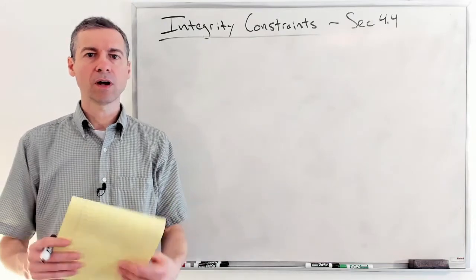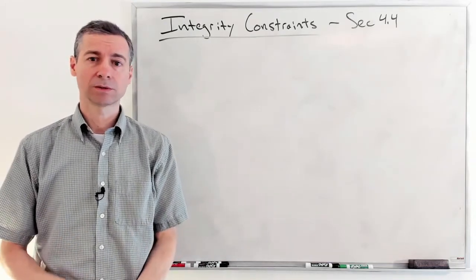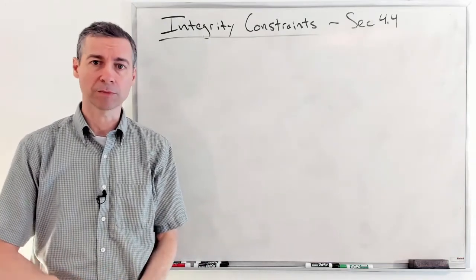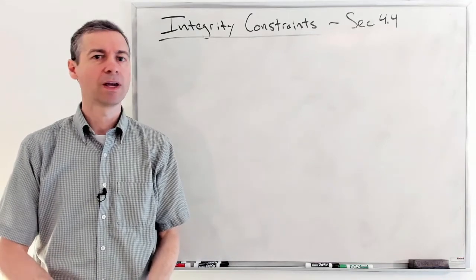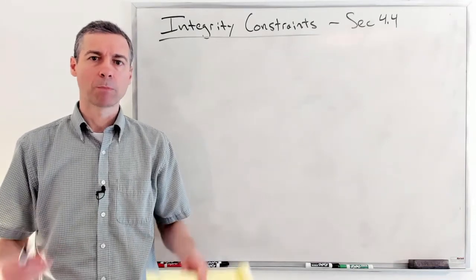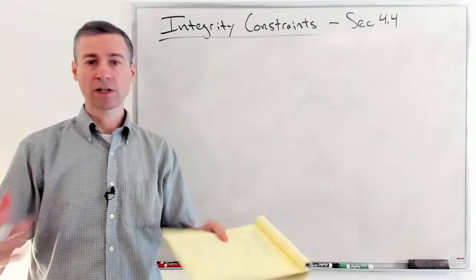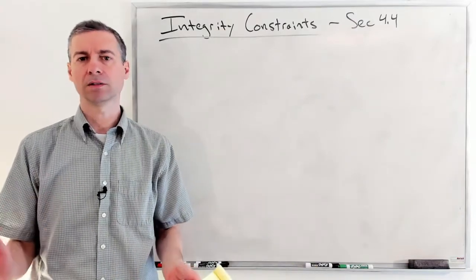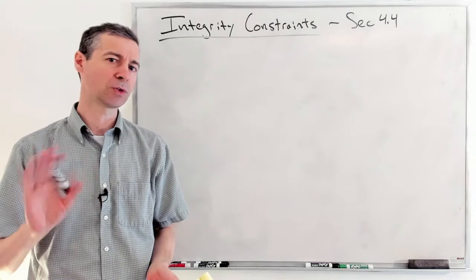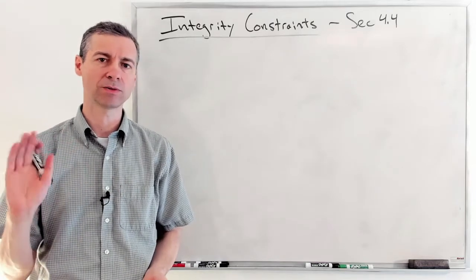And how could you ever make a mistake? Well, you're going to write programs and you're going to be running queries and things. And we all make mistakes. But the integrity constraint is there and says, uh-oh, no, I'm not going to allow that because you told me in advance not to allow you to do that.